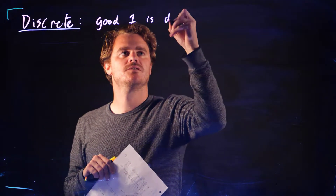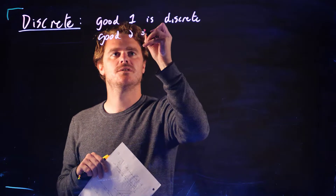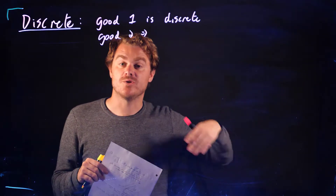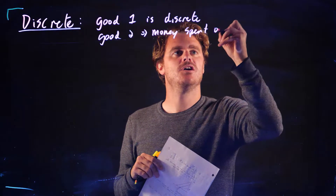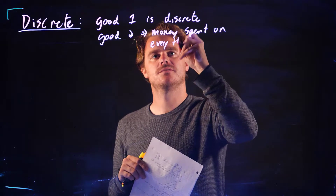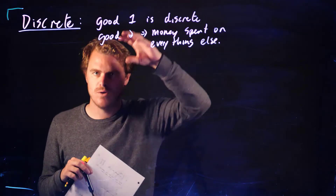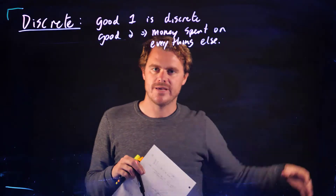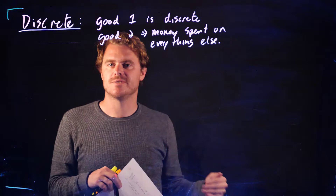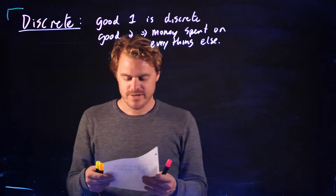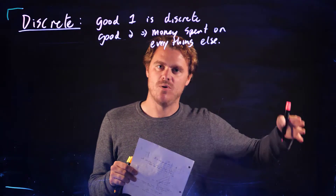Let's pretend good one is discrete and good two is a composite good — money spent on everything else. Good one is some discrete good that we can only buy in whole units: one, two, or three. We can't buy continuous amounts. Good two is just money spent on everything else. To solve this, we find all the discrete points and their utility.